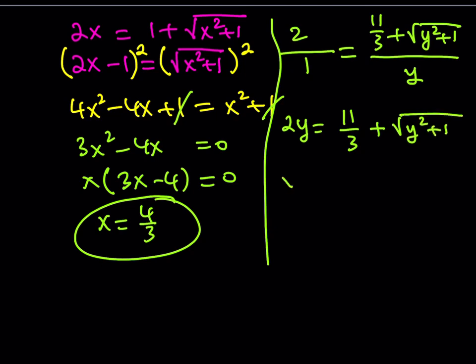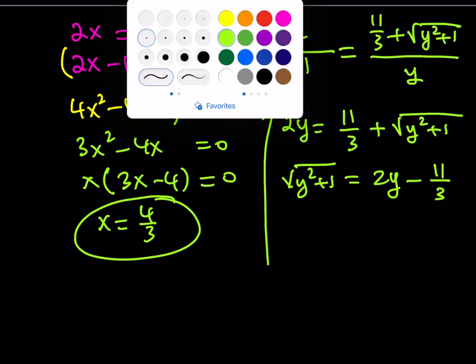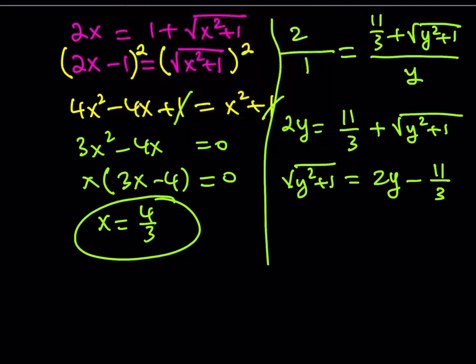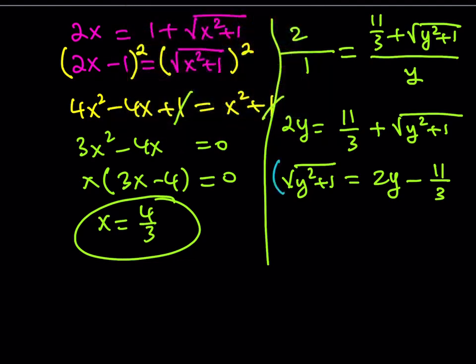We isolate the radical and square both sides. Something good happens because we get rid of the radical. y squared plus 1 equals 4y squared minus 44/3 · y plus 121/9. Moving everything to one side and simplifying gives something nicer.